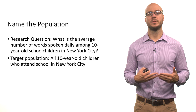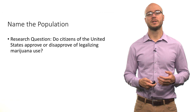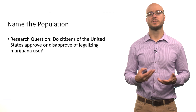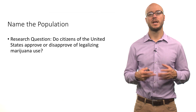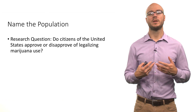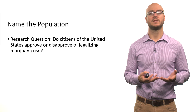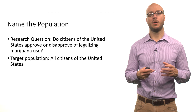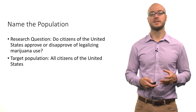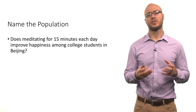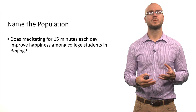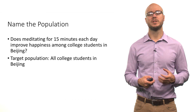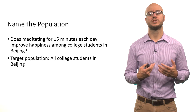For the next research question — suppose you're a sociologist or political scientist wanting to know about legalizing marijuana — the target population is all citizens of the United States. For the third research question about meditation, the target population implied is all college students in Beijing. These research questions imply a target population.